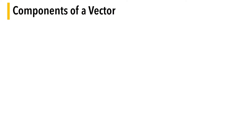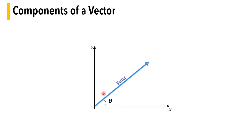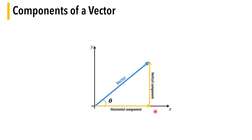Let us consider that we have a vector making an angle theta with the x-axis. We can find its components: one is a horizontal component and the other is a vertical component. The horizontal component along the x-axis is called the x-component, and the vertical component along the y-axis is called the y-component.